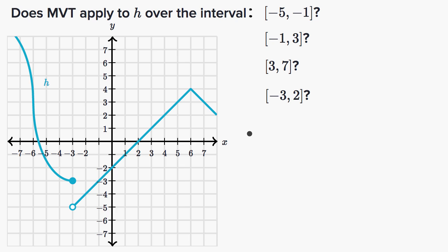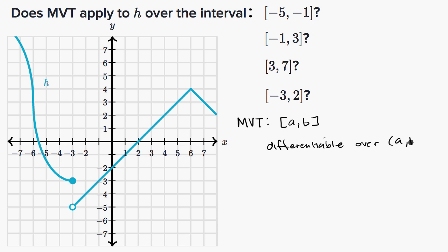If the words 'mean value theorem' are completely unfamiliar to you, I encourage you to look at the mean value theorem introduction or the existence theorem introductions on Khan Academy. As a review for those familiar with the mean value theorem: the conditions are, if we're dealing with some closed interval from a to b, we have to be differentiable over the open interval from a to b, and we have to be continuous over the closed interval from a to b.